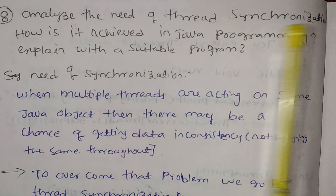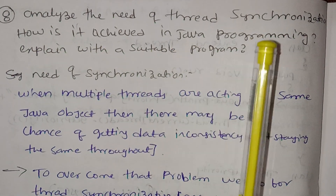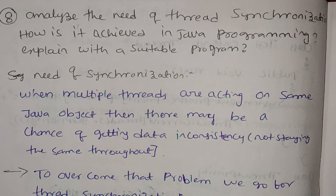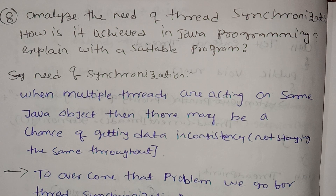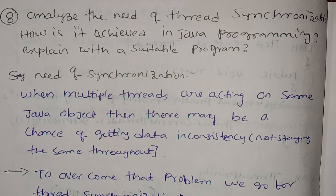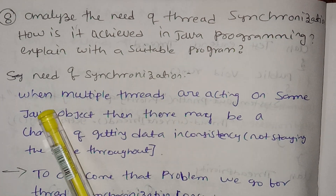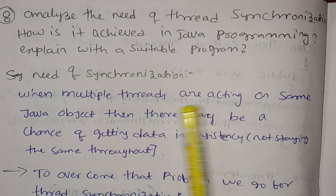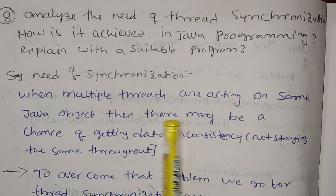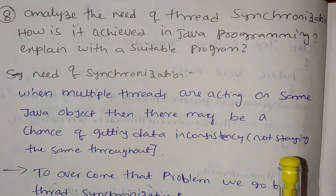Analyze the need of Thread Synchronization, how it is achieved in Java programming, and explain with a suitable program. First, what is Synchronization? When multiple threads are acting on the same Java object, then there may be a chance of getting data inconsistency.